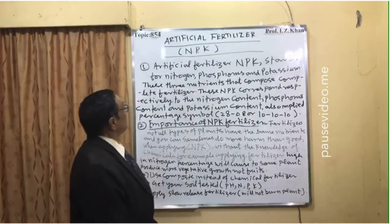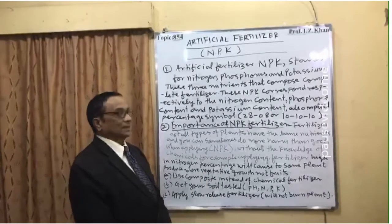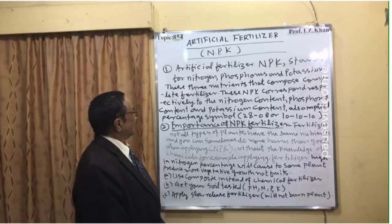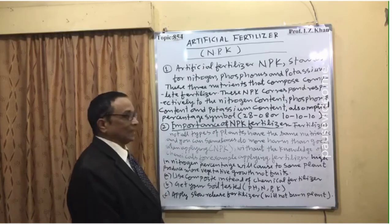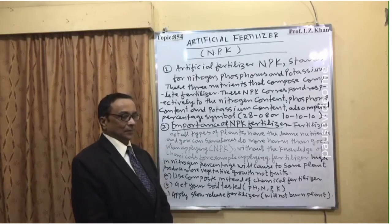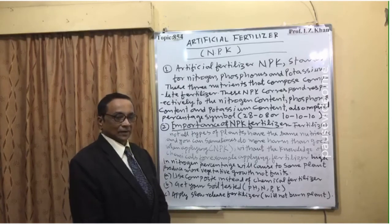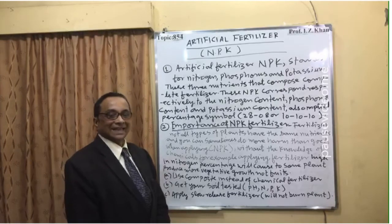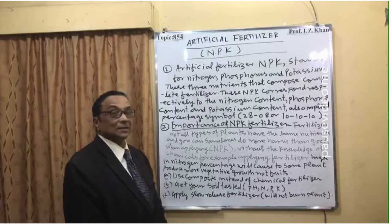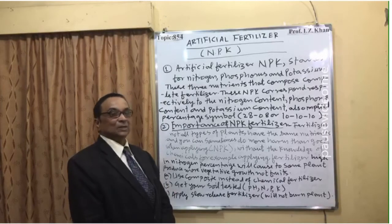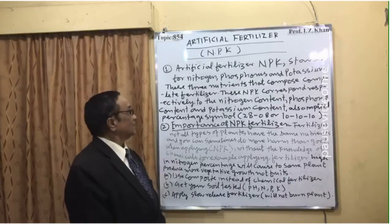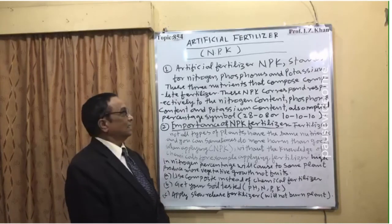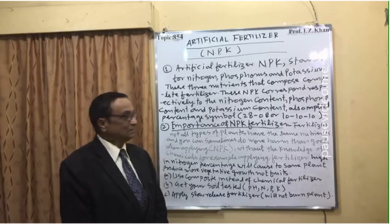NPK stands for nitrogen, phosphorus, and potassium — the three nutrients that compose a complete fertilizer. When all three are present, it is known as a complete fertilizer. If any one of these three is absent, it is called an incomplete fertilizer. Sometimes we need incomplete fertilizer because some nutrients may already be present in high percentage in the soil. These NPK numbers correspond respectively to the nitrogen, phosphorus, and potassium content.